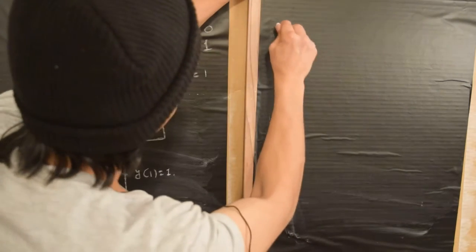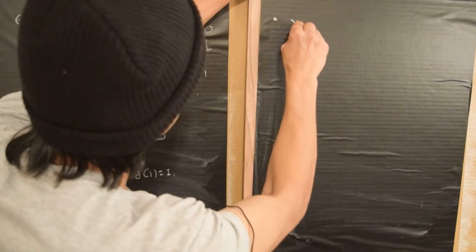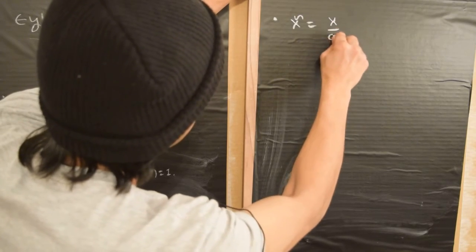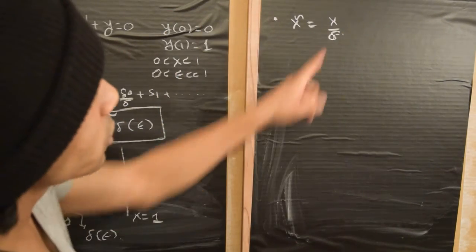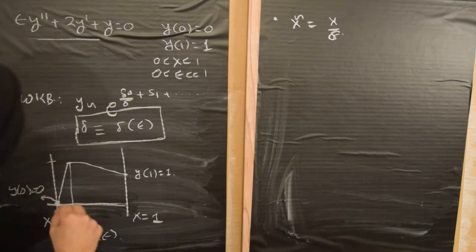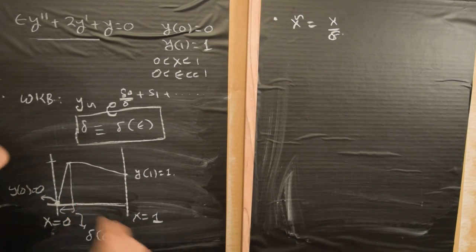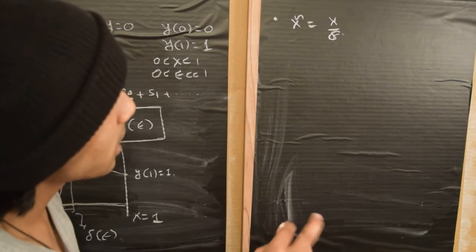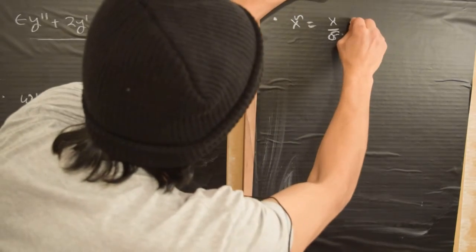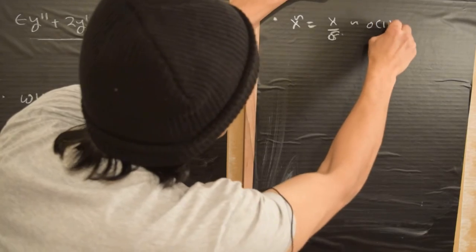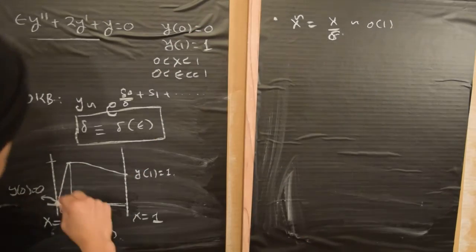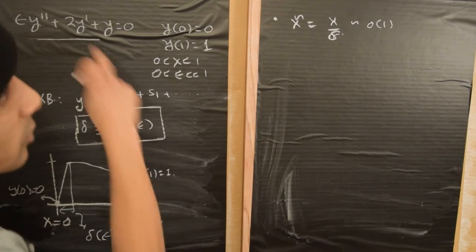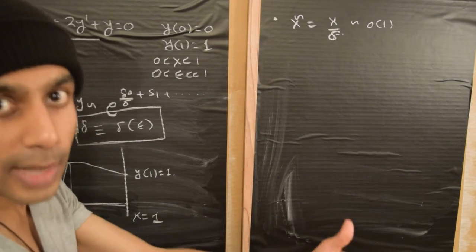We make a change of variables and define a new variable x-tilde, which is x divided by delta. If x lies within the boundary layer region, then x divided by delta would be characterized as order one. So over this region, if we make this change of variables, the derivatives do not change very rapidly.